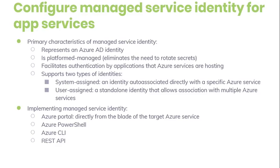Your application can be granted two types of identity. A system-assigned identity is tied to your application and is deleted if your app is deleted. An app can only have one system-assigned identity. System-assigned identity support is generally available for Windows apps. A user-assigned identity is a standalone Azure resource that can be assigned to your app. An app can have multiple user-assigned identities. User-assigned identity support is in preview for all app types.